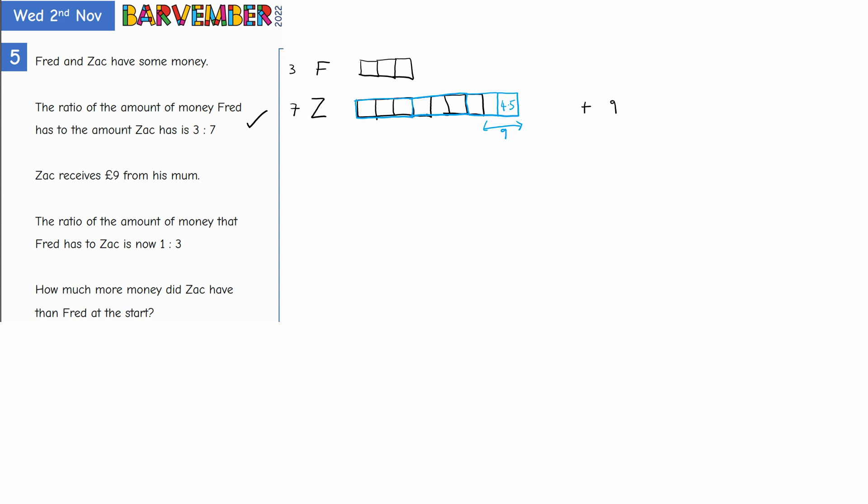And what are we asked? We are asked how much more money did Zach have than Fred at the start. Now this was the start here, and this was the start. So what's the difference. The difference is one, two, three, four parts different. So four parts difference. And each part has a value of four point five. So four times four point five, or in fact, because we know that each is the same as saying two times nine, gives us a difference of 18 pounds.